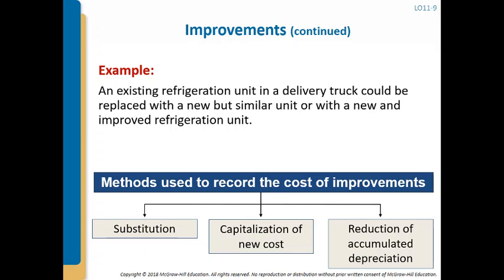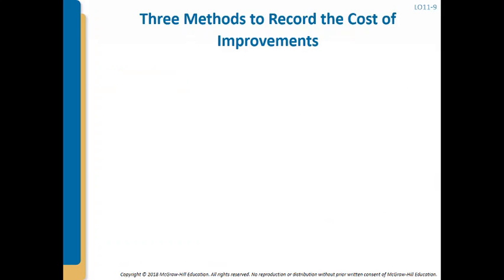There are three methods you can use to record the cost of improvements: the substitution method, which is the easier method to conceptualize; the capitalization of new cost method; and the reduction of accumulated depreciation method.